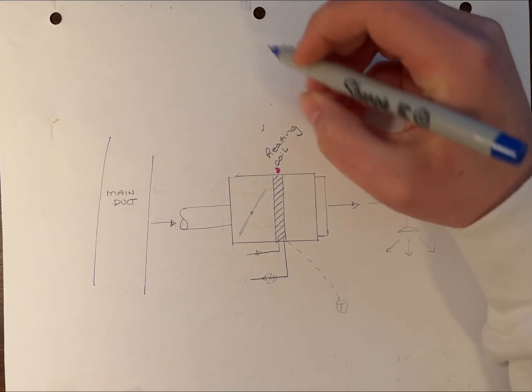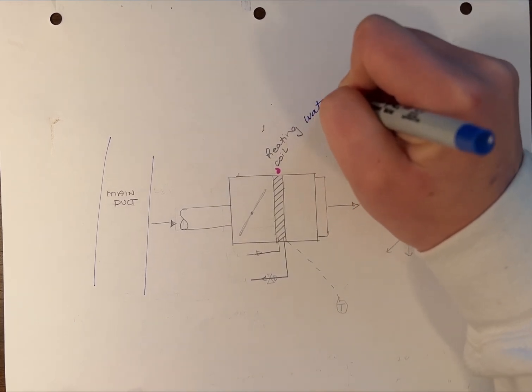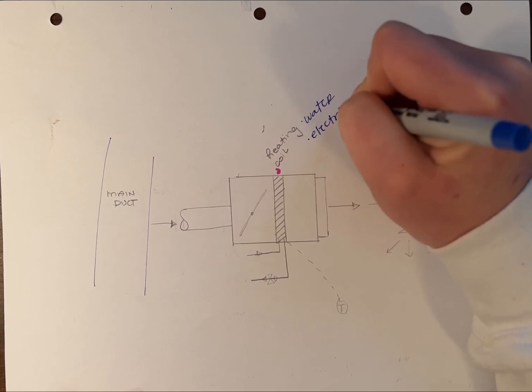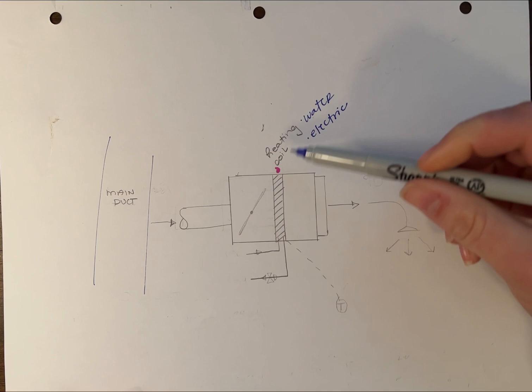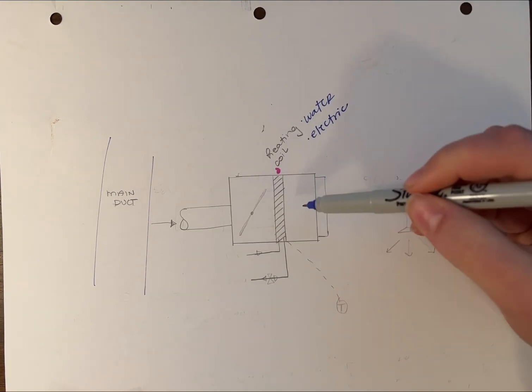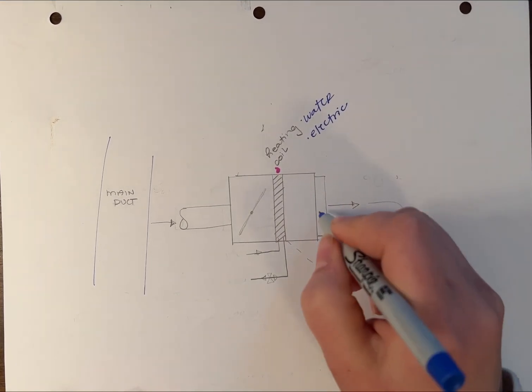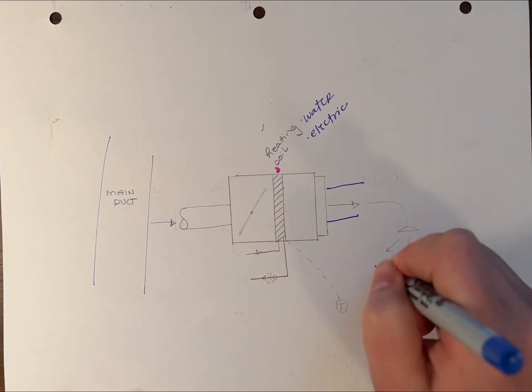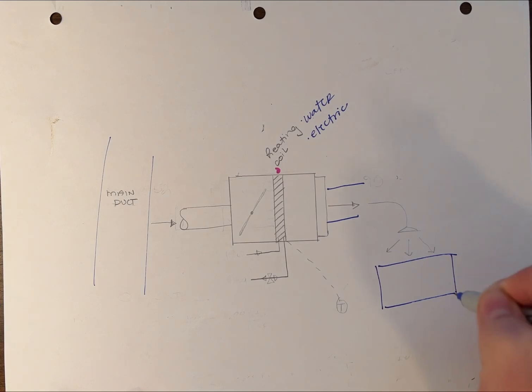The heating coil can either be hot water or electric, and it provides temperature control for the air going through the VAV box. The conditioned air then goes out through ductwork into your space.